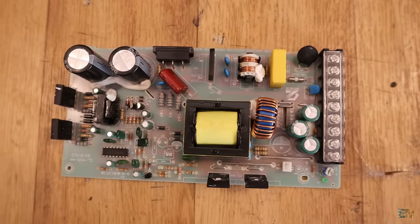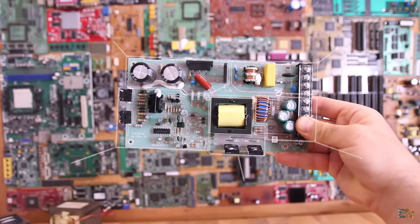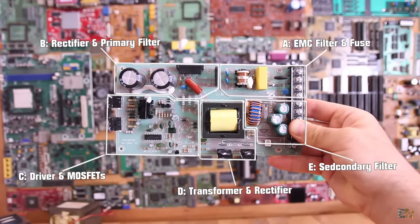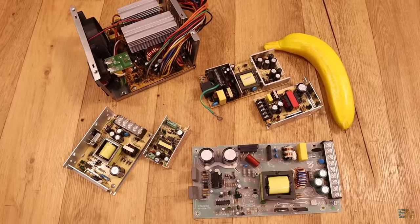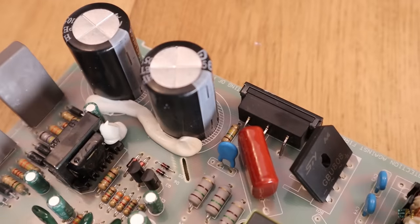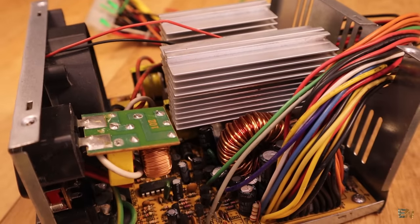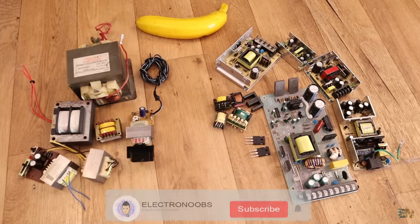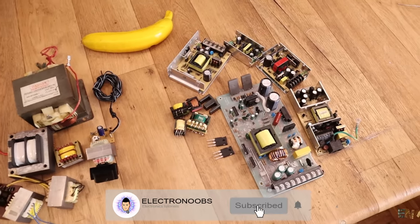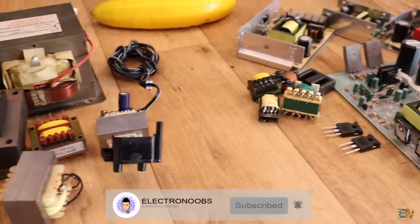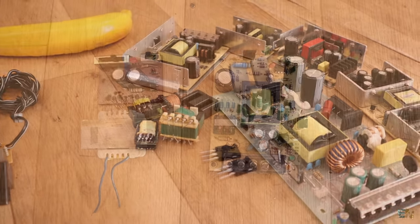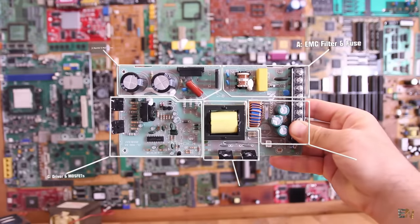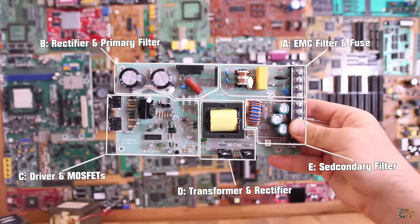So guys, that's how a basic switch mode power supply works and these were all the basic blocks it could have. Some more performance supplies might have even more blocks for the power factor correction and so on. PC power supplies like this one here usually have multiple value outputs and more feedback options for safety features. I hope that you have learned something new and that you liked this video. If so, give it a like and also consider subscribing and activating the notification bell. Consider supporting me on Patreon. Thanks again and see you later guys.